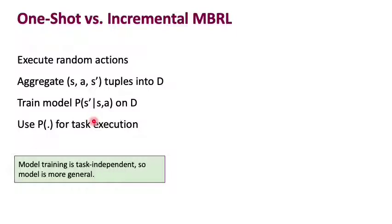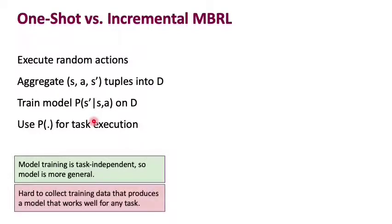You could train that model and then use it for executing potentially any task afterwards. The flip side of that is that it's actually really hard to collect good training data that would produce a model that would work well for any task. This style of model-based reinforcement learning is called one-shot model learning, where you only have one shot at collecting data and training a model, and once you've done that you have to use it for some task afterwards.